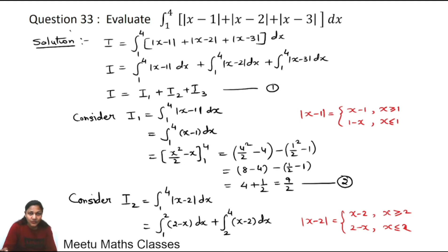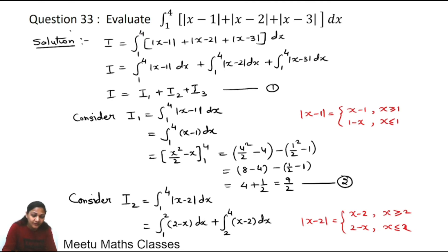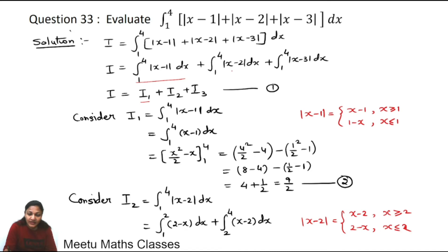Now let us take our next question, that is Question Number 33: evaluate integral from 1 to 4 of |x−1| + |x−2| + |x−3| dx. First of all we can separate the three modulus terms into three integrals: I = I₁ + I₂ + I₃, where each Iₙ handles one modulus term.